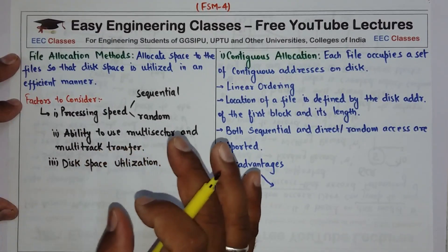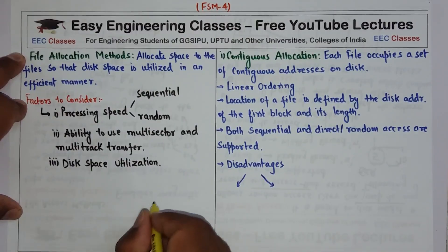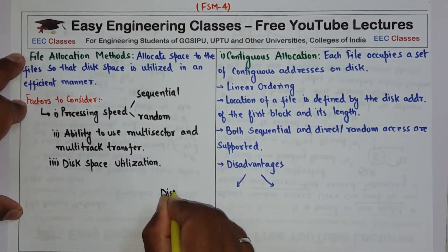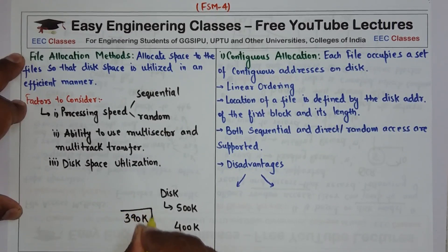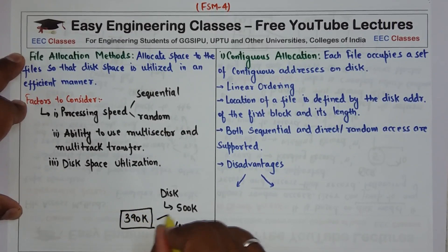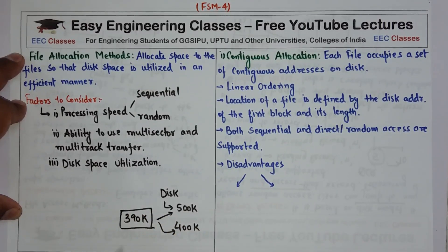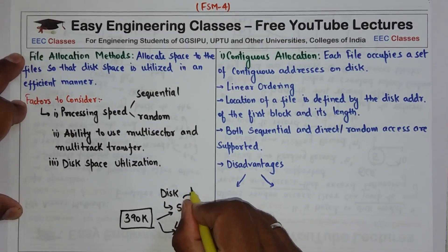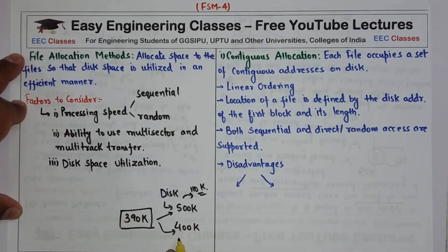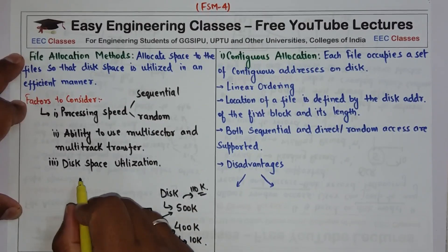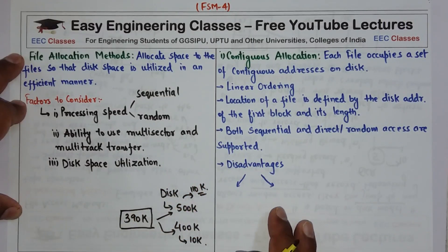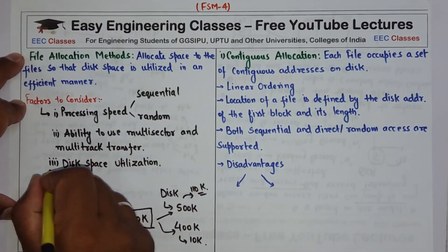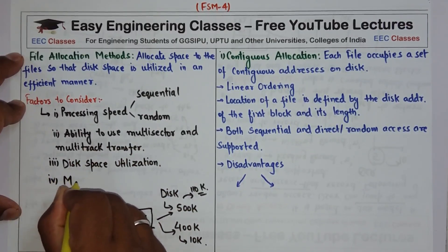For example, if I have a disk with a block size of 500K and one block of 400K, and I have a file of 390K to allocate, I can choose either 500K or 400K. If I choose 500K, I am wasting 110K of memory; if I choose 400K, I am wasting only 10K. Disk space utilization says choose the block in which disk space is better utilized. This is the third factor, and the fourth factor is main memory requirement.